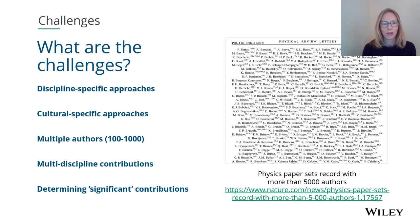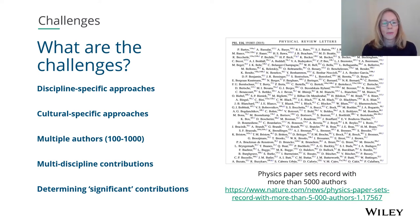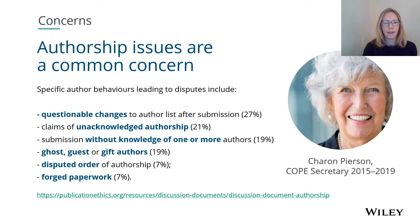So what are the challenges that people face? There are certainly different discipline-specific approaches taken with respect to authorship — it's very different, for example, in the humanities as opposed to the biomedical sciences. We also see cultural-specific approaches, and there can be challenges where there are many authors on a paper. This is an example of a physics paper which set the record with more than 5,000 authors. Collaborations across disciplines can be tricky as well in determining authorship and significant contributions — who should be an author, and who should be acknowledged? Of all the research integrity and publication ethics issues brought to COPE, authorship issues are a common concern.